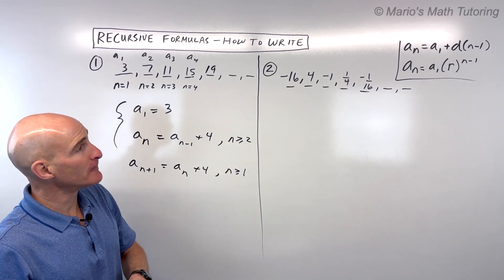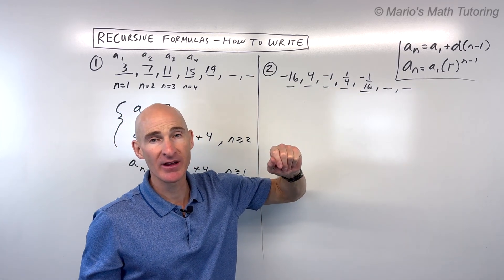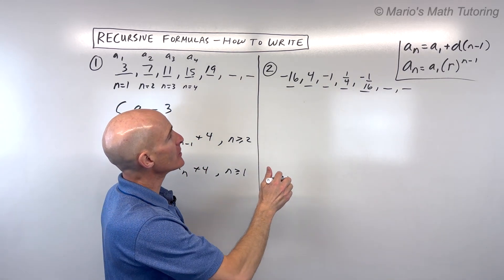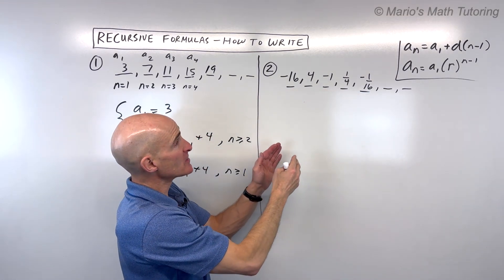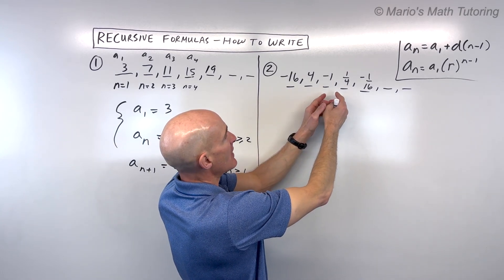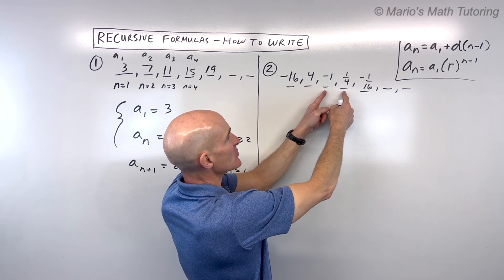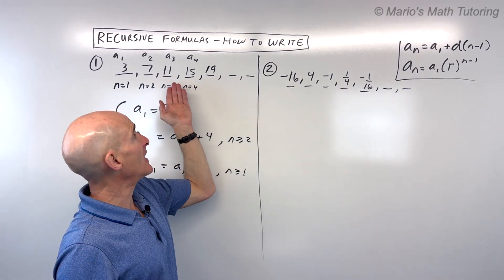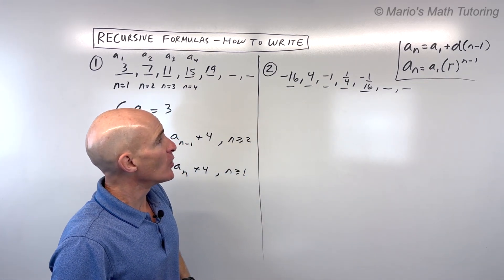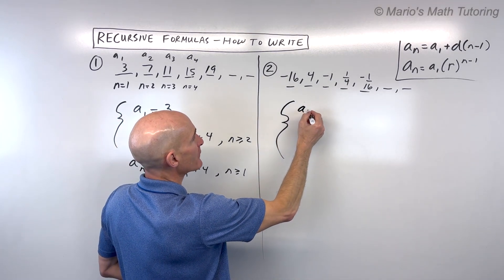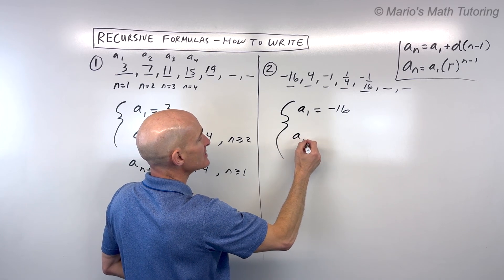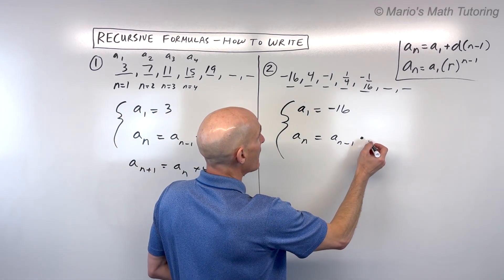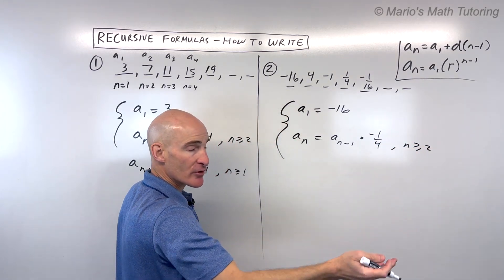For number two, how are we getting to the next term each time? You can probably recognize here that we're multiplying by negative 1/4. Sometimes what helps is to look a little further down the line — negative 1 times negative 1/4 is 1/4. I know I'm multiplying by a negative because it alternates positive, negative, positive, negative. This is what you already learned as a geometric sequence — this was an arithmetic sequence where you're adding; here we're multiplying. So to write our recursive formula: we're starting at negative 16, then to get to the next term I take the previous term — that's what a sub n minus 1 means — and multiply by negative 1/4. This is for n greater than or equal to 2.